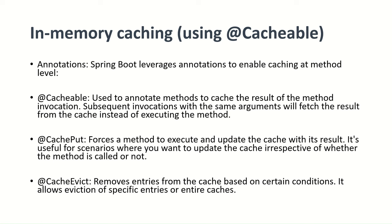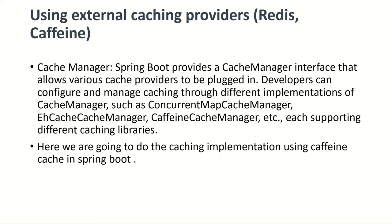The second way of implementing cache in Spring Boot is using external caching providers like Redis or Caffeine. In this video we are going to use Caffeine Cache as our external caching source. Spring Boot provides a CacheManager interface that allows various cache providers to be plugged in. Developers can configure and manage caching through different implementations such as ConcurrentMapCacheManager, EhCacheCacheManager, CaffeineCacheManager, etc. Here we are going to use CaffeineCacheManager.